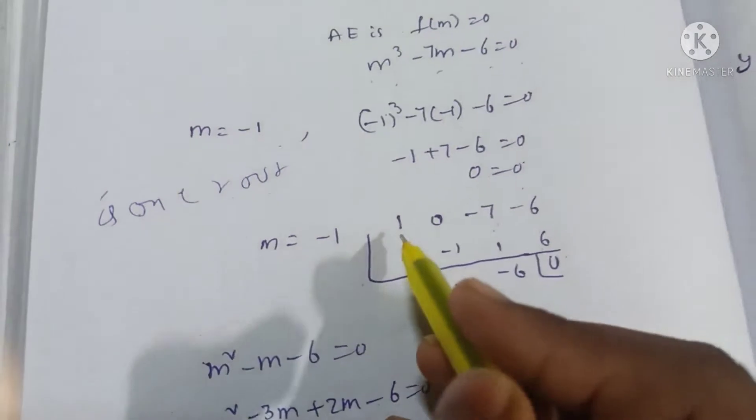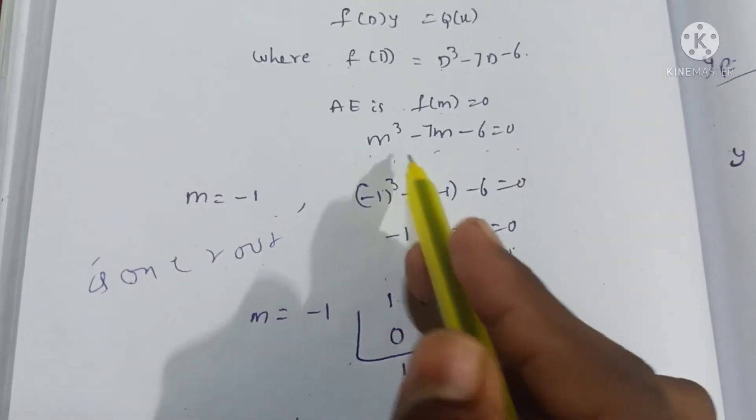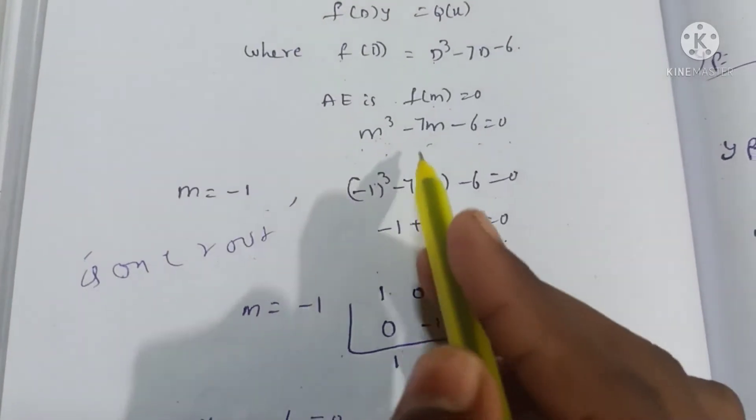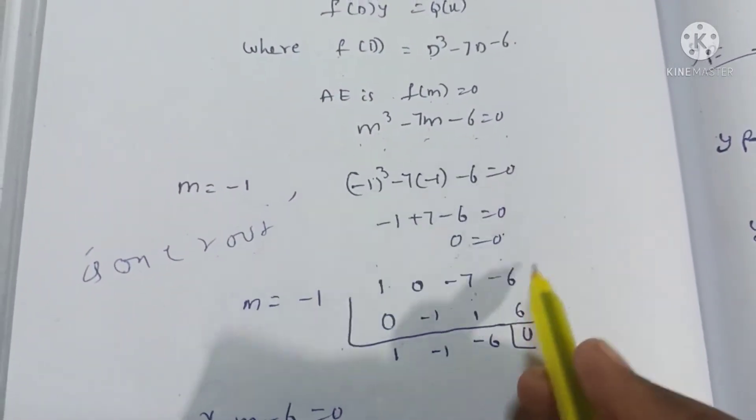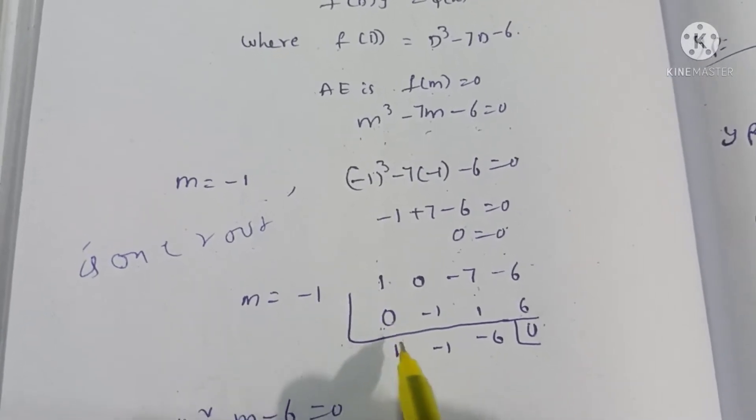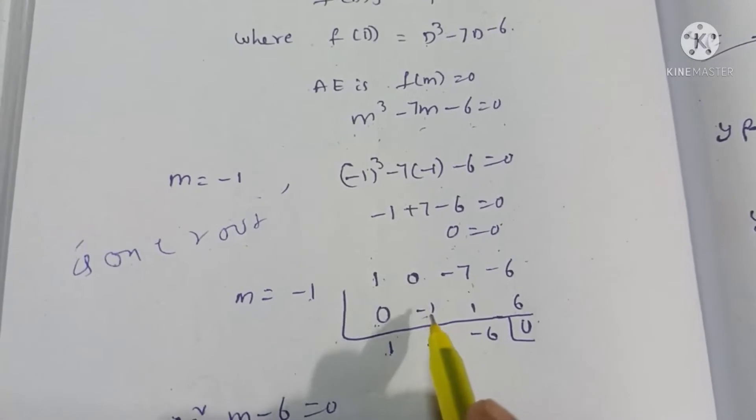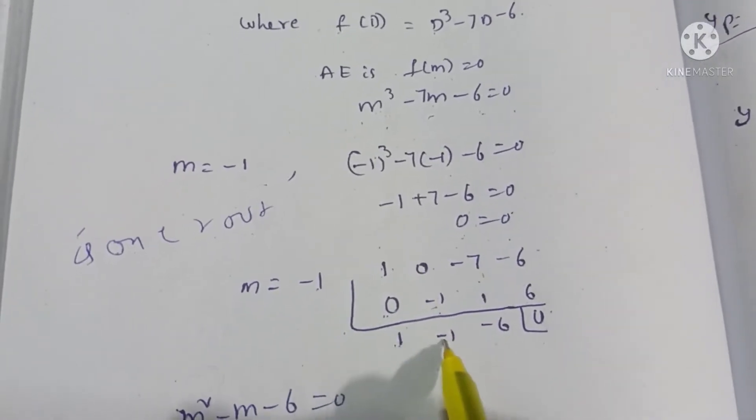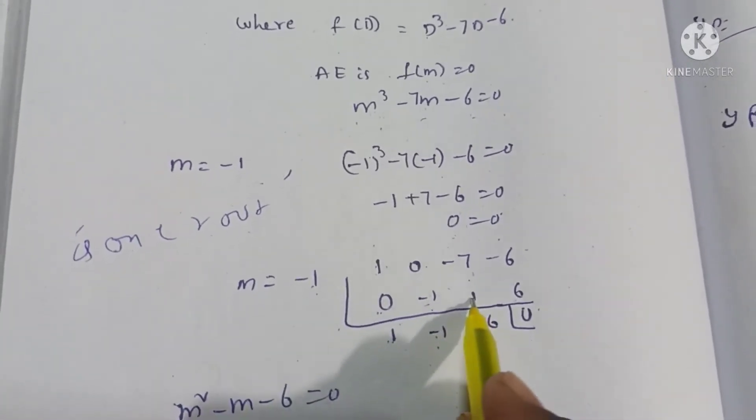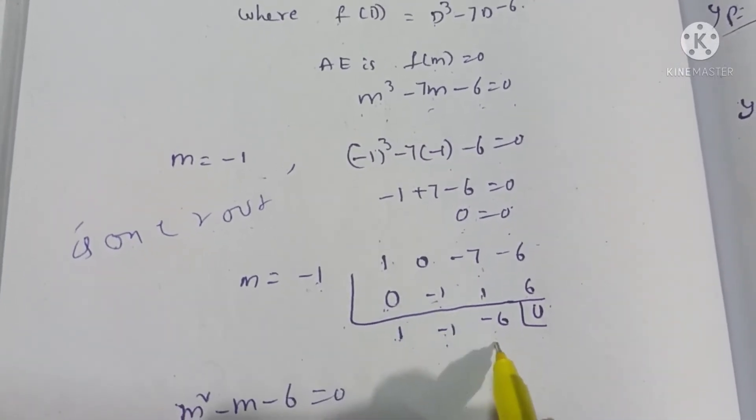So m = -1 is one root. Now using division method: m³ coefficient is 1, m² coefficient is 0, m coefficient is -7, and constant is -6. Bringing down: -1 times 1 is -1, 0 plus -1 is -1.